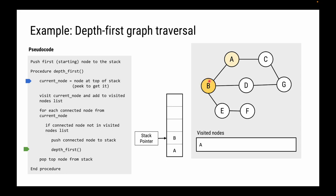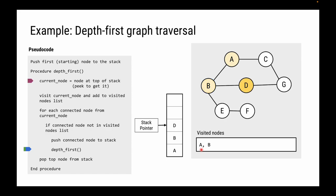We visit B and add it to the visited nodes list. B is connected to A, D, and E. A is already visited, so we skip it. D is not visited, so we push D onto the stack and start the process again with D as the new current node. We visit D. D is connected to B and G - B is already visited, but G is not, so we push G onto the stack.